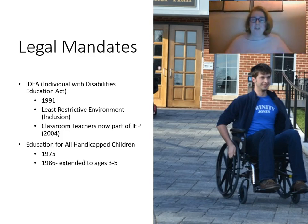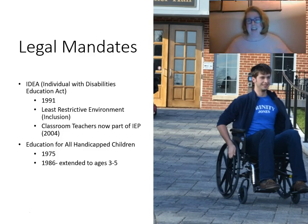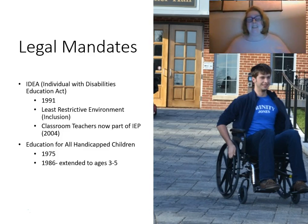We started educating all students in 1975 with the passage of the Education for All Handicapped Children Act. Prior to 1975, schools were allowed to deem certain children uneducatable — meaning they could deny public education to students based on their levels of ability. In 1986, this act was extended to children ages 3 through 5, so starting at age 3, students can receive services through the school district if they have a disability or a developmental delay.